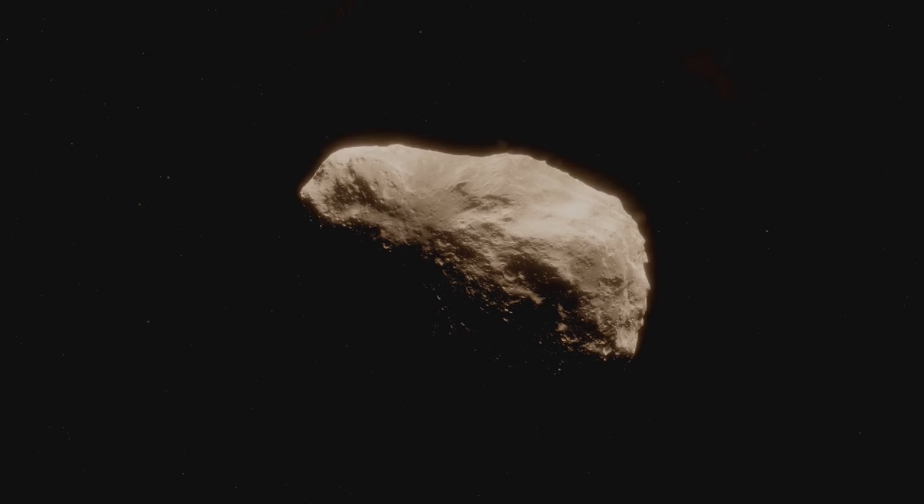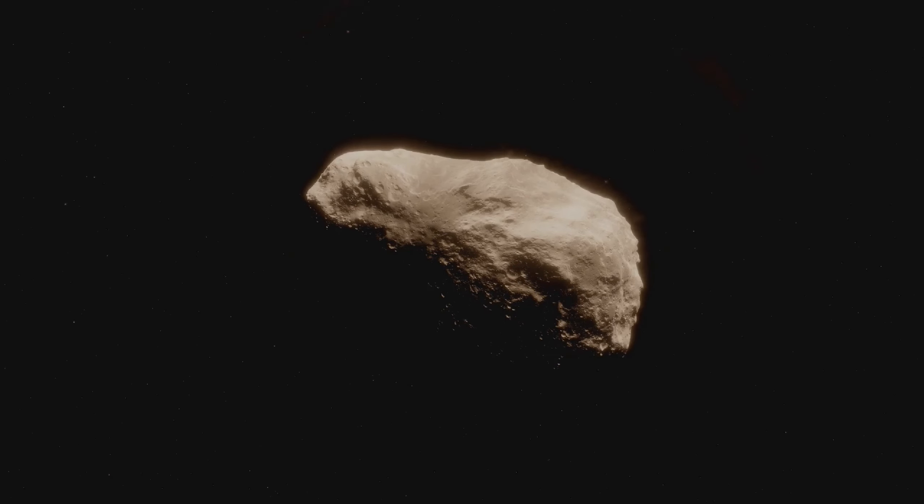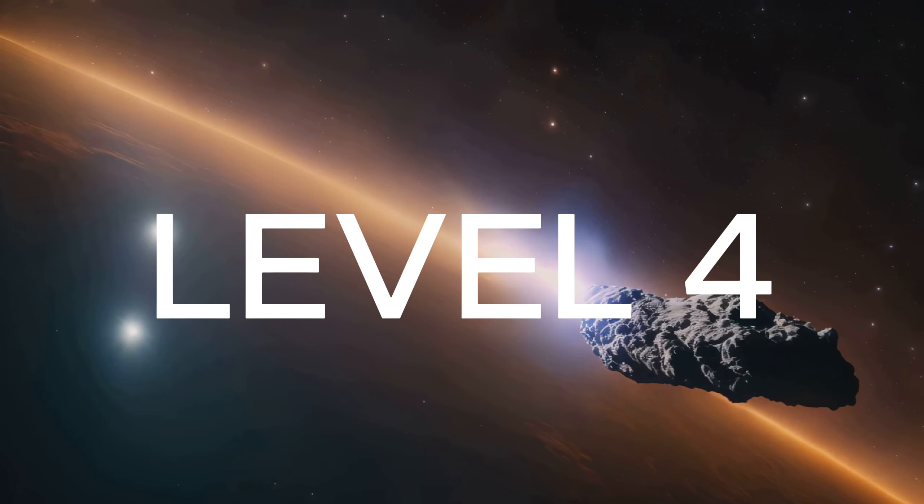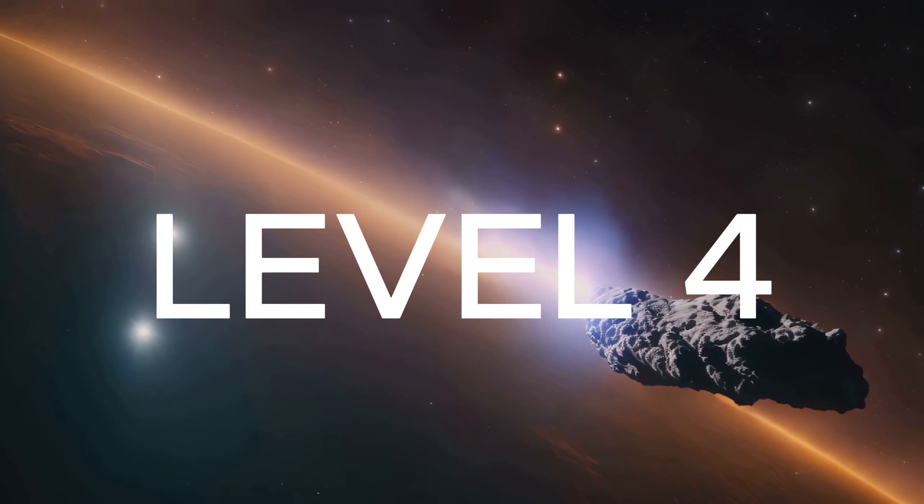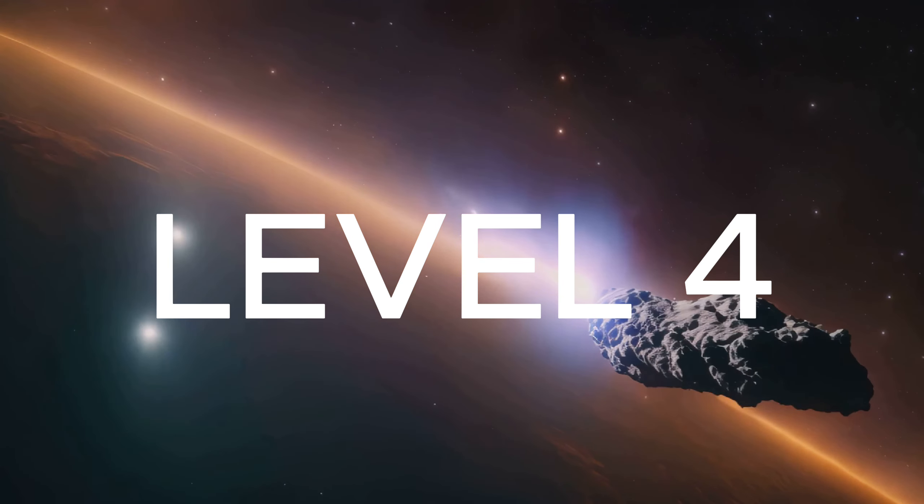Apophis is no ordinary asteroid. It's a celestial body that has stirred both curiosity and concern since its discovery in 2004. Named after the Egyptian god of chaos, Apophis captured the imagination of astronomers and the public alike. When first identified, it briefly reached level 4 on the Torino Impact Hazard Scale. To put this in perspective, a score of zero indicates no likelihood of impact, while a score of 10 signifies a certain collision capable of causing global catastrophe.